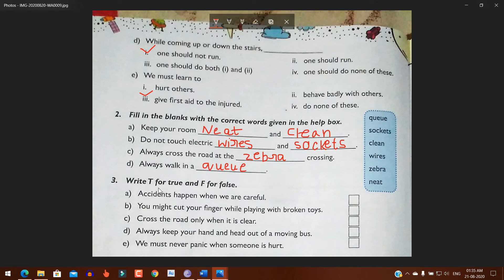Number three: Write T for true and F for false. Number A: Accidents happen when we are careful. False. Number B: You might cut your finger while playing with broken toys. True.